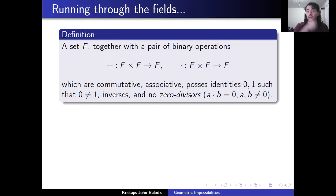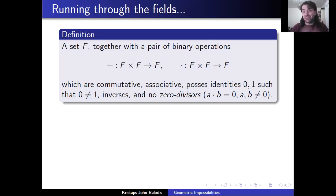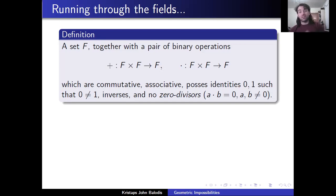So 0 being the additive identity means a plus 0 is equal to a for all a, and 1 times a is equal to a for all a, such that 0 is not equal to 1. Remember, 0 and 1 stand here for the identities of the field operations — we're simply decreeing that the identity of multiplication cannot equal the identity of addition. And no zero divisors — no pair of numbers such that their product under this operation can be 0 when neither of them themselves are 0.